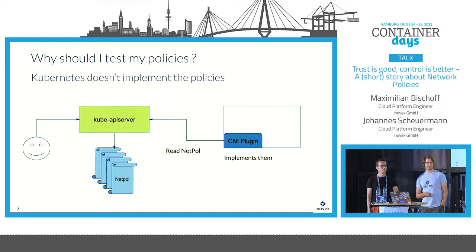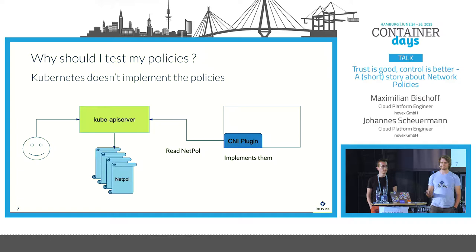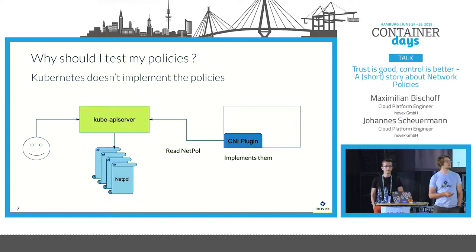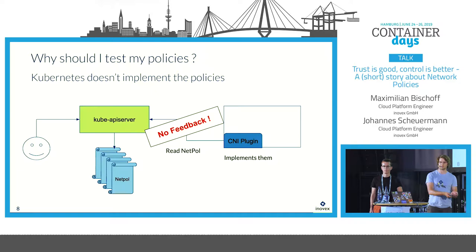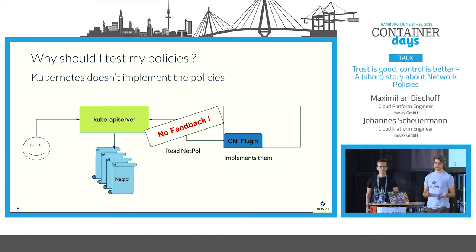The next point is Kubernetes itself doesn't really implement the policies — it's just an API object. You can create them and the Kubernetes API server will store them in etcd. Everything is loosely coupled, and the CNI plugin, for example Calico, will listen to network policies and implement them. The problem with this loose coupling is you don't get any feedback. If you use a CNI plugin like Flannel that doesn't implement network policies, you create the policy as an object but never get feedback that it has no effect.